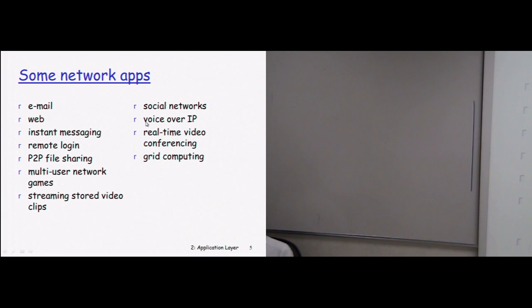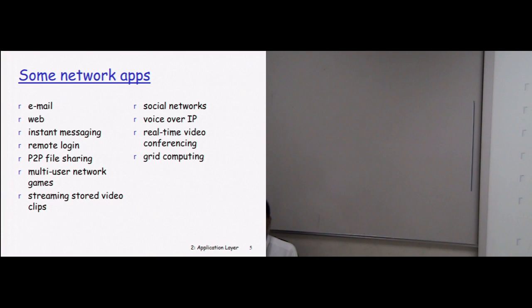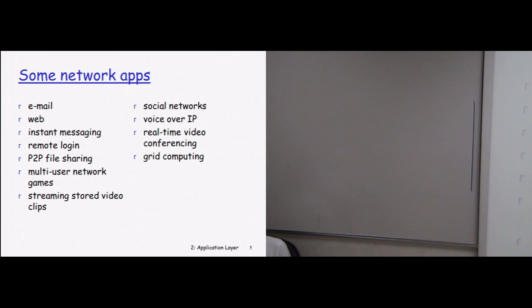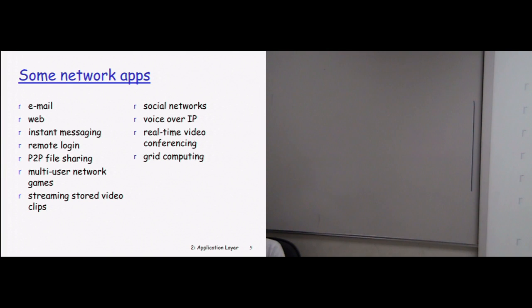Voice over IP service: migration has started from ordinary telephone to internet telephone, which is Voice over IP. On one cable you can get three services — called triple play. A single optical fiber comes into the home, terminates on your modem, and you get telephone service, internet service, and cable TV service all on one single wire.